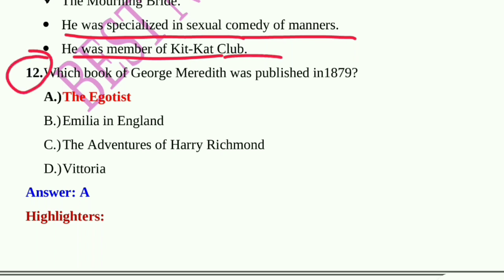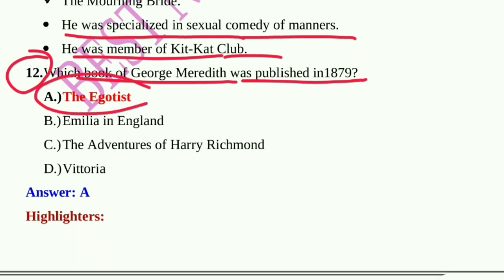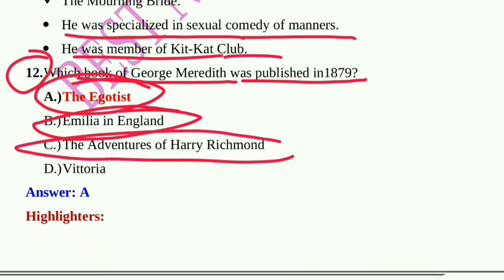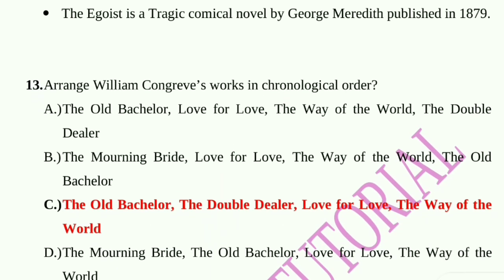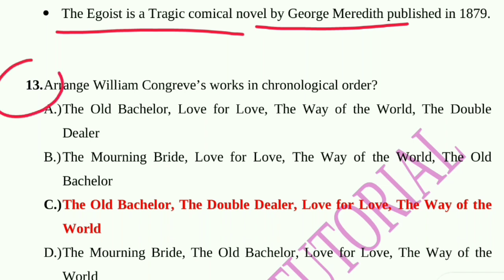Question number 12: Which book by George Meredith was published in 1879? Options: The Egoist, Emilia in England, The Adventures of Harry Richmond, or Victoria. The answer is The Egoist. The Egoist is a tragicomical novel by George Meredith, published in 1879.